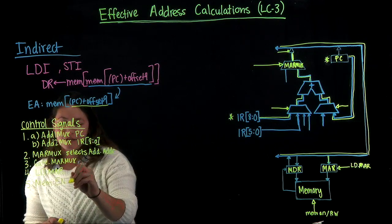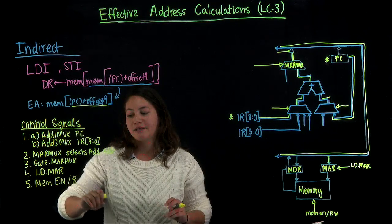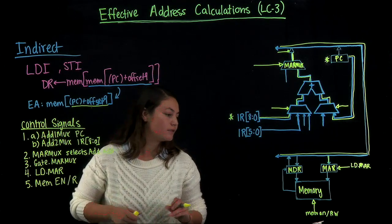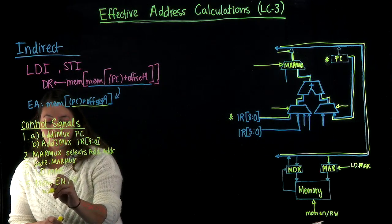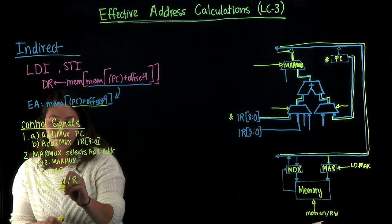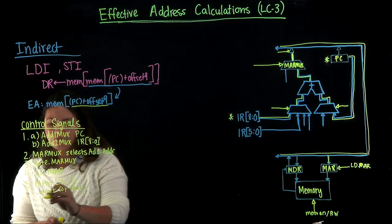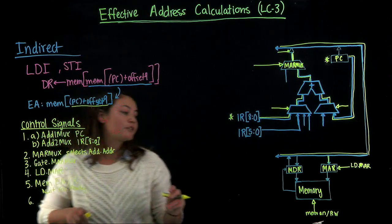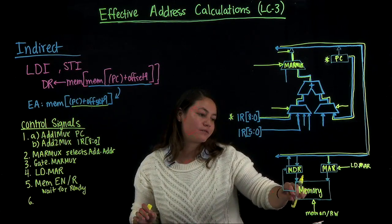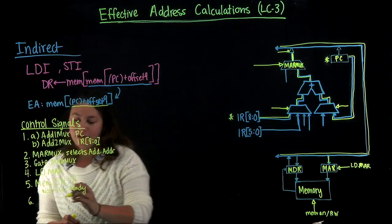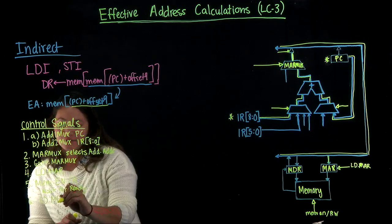This is a two-bit control signal that turns on memory and then says either for reading or writing. Once we send that control signal to memory, we want to wait for the ready signal from memory. Once we get that ready signal from memory that it's done reading from that address, we want to load that value into the MDR. So we want to send a write enable to the MDR.